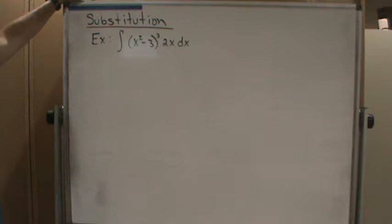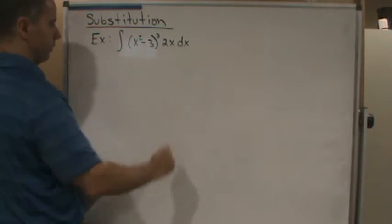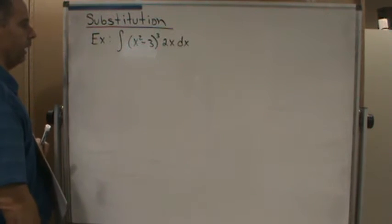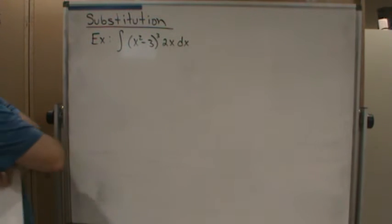If we didn't have u-substitution, then we would have to expand this thing out and then do it term by term using the power rule, or we'd have to look for something else. But here in this case we can make this much simpler by just doing a u-substitution.